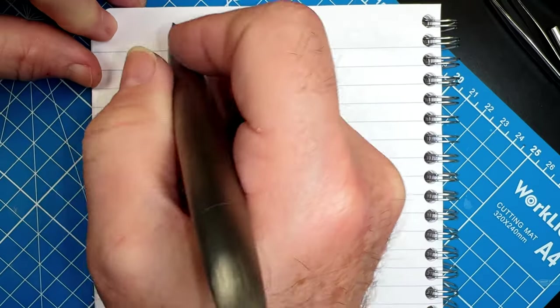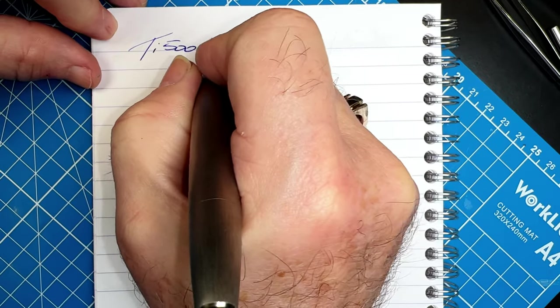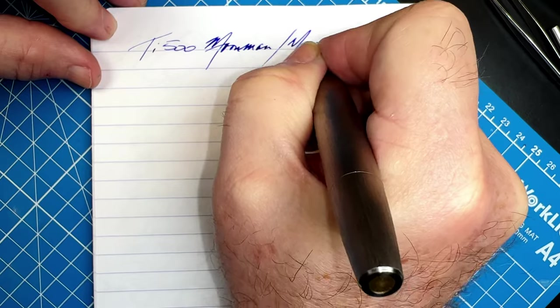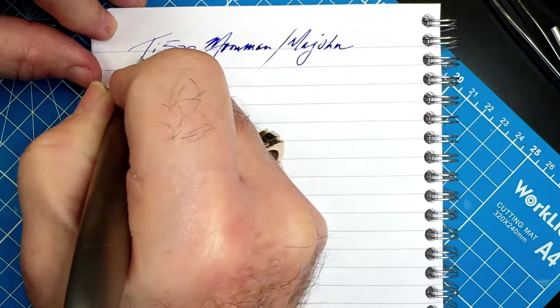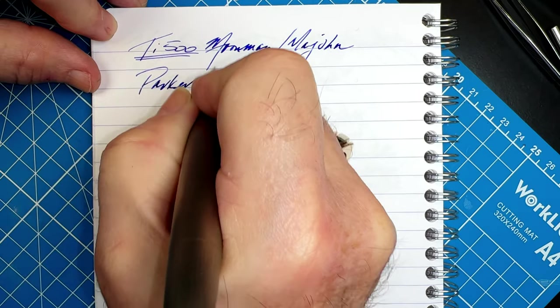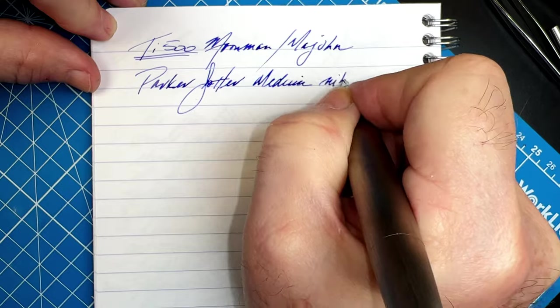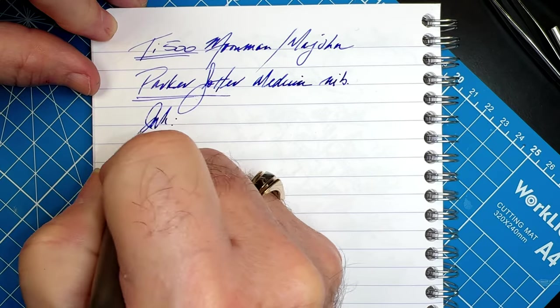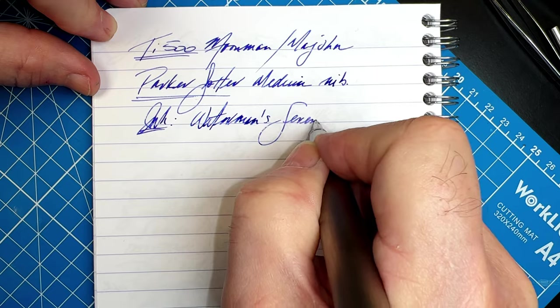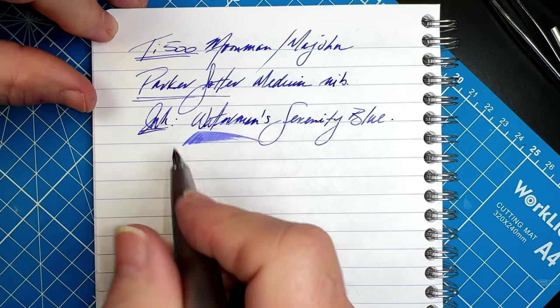And here we go with the Ti-500. It is a Moonman, Majohn, whatever you want to call it. It now has a Parker Jotter medium nib and the ink is Waterman's Serenity Blue. Well that's nicely wet now.